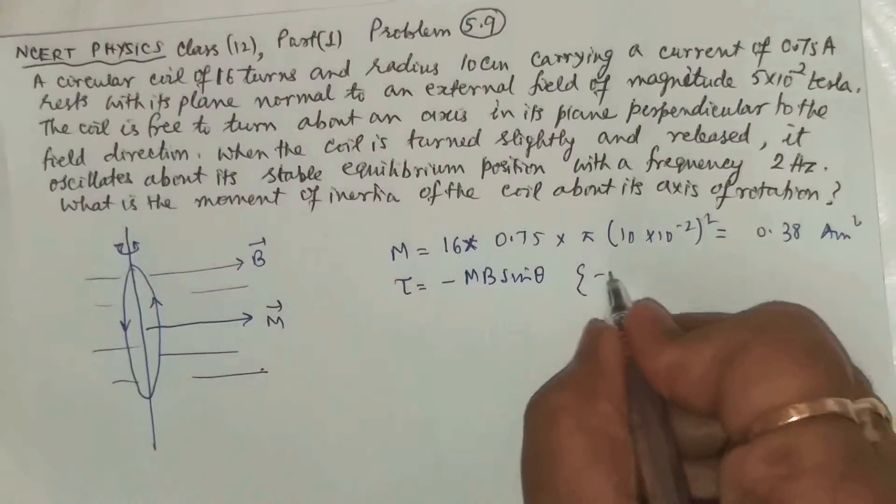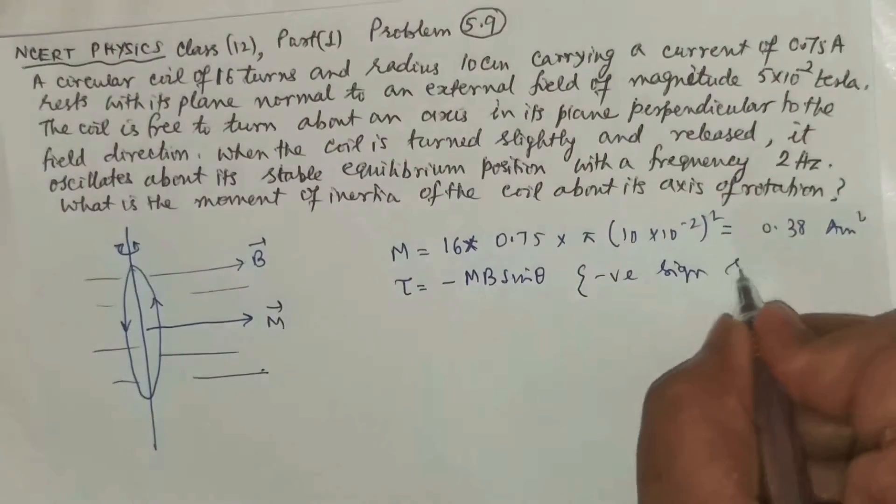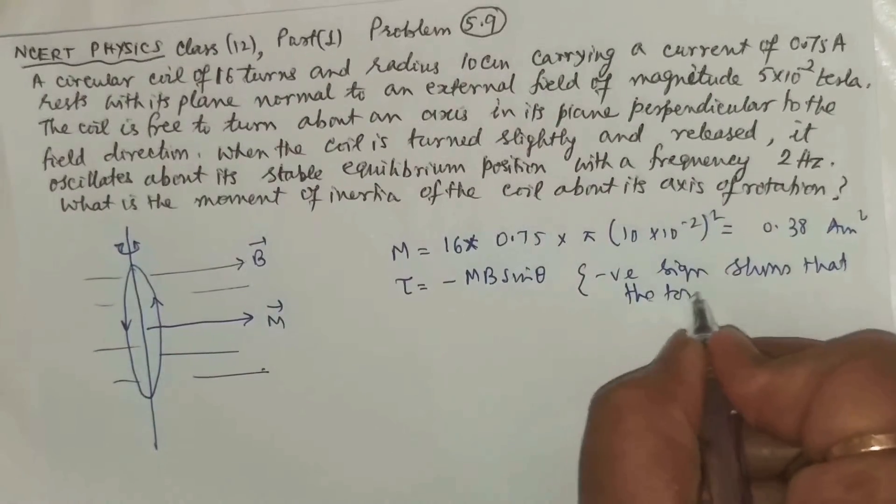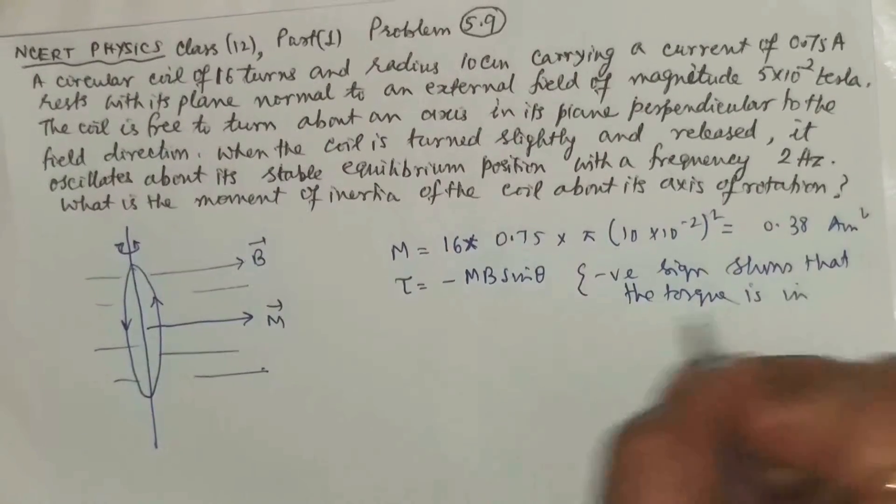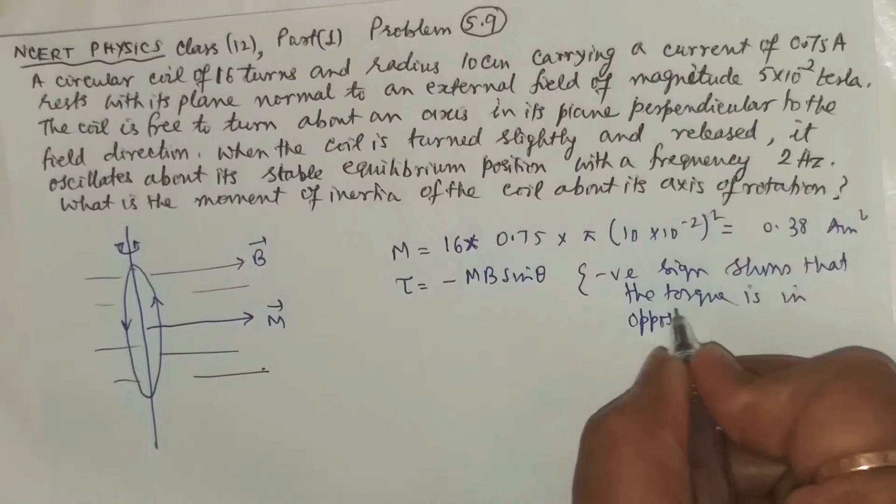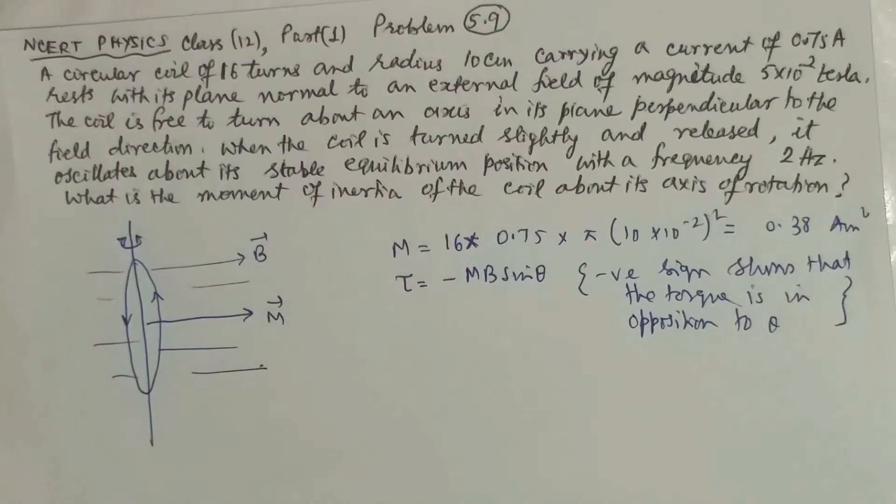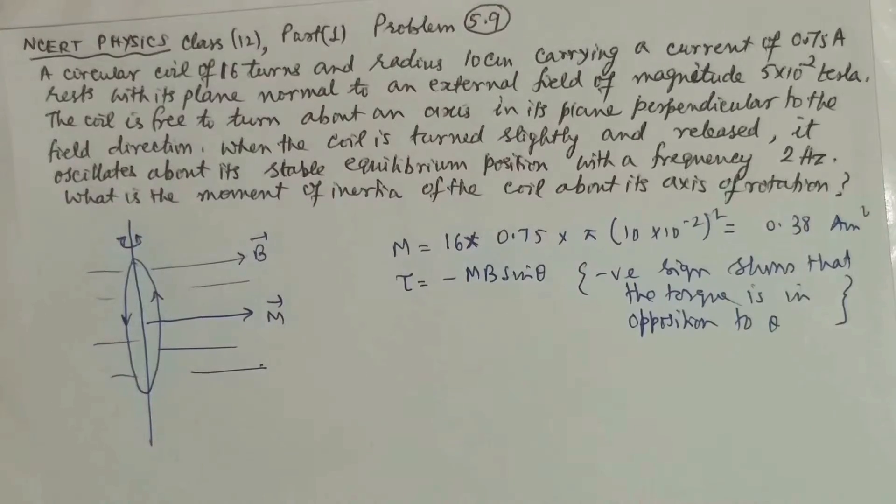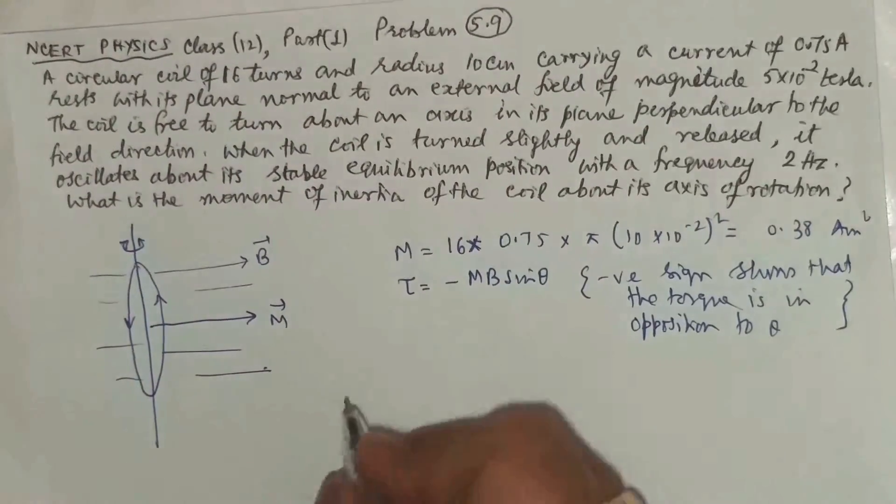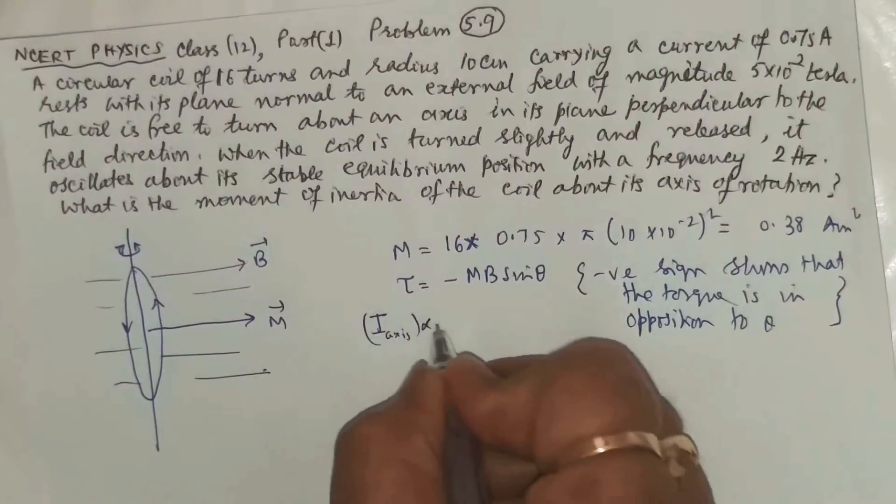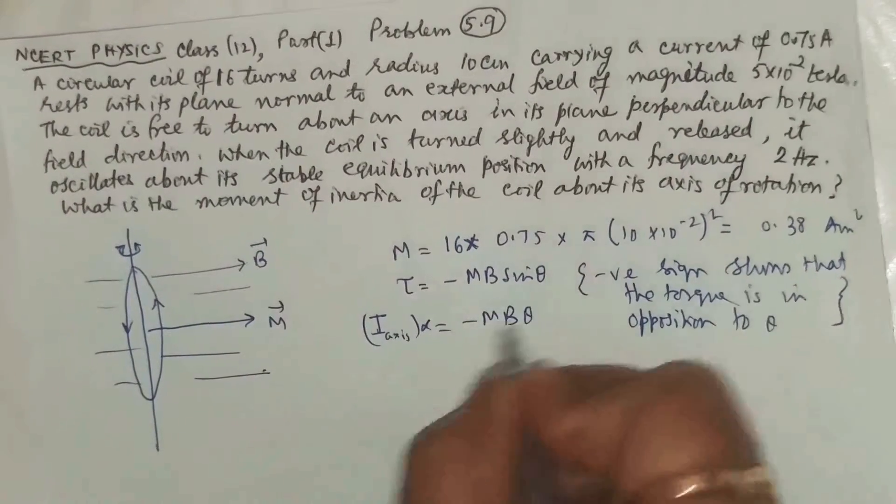The negative sign shows that the torque is in opposition to the displacement. And as theta is very small, you can replace sin theta as theta. Torque is equal to I about this axis into alpha, and that is mb theta.